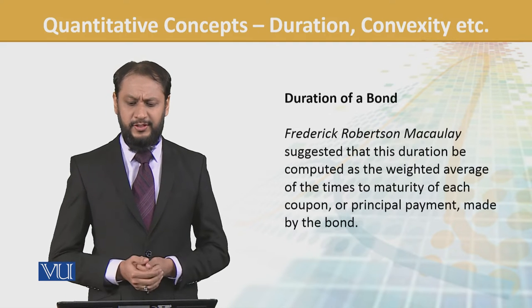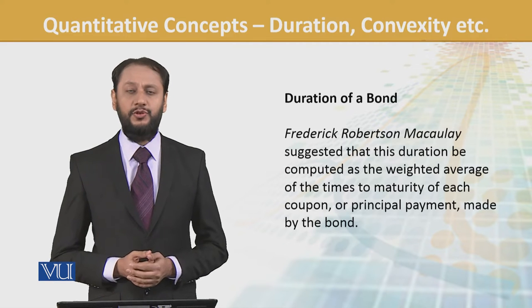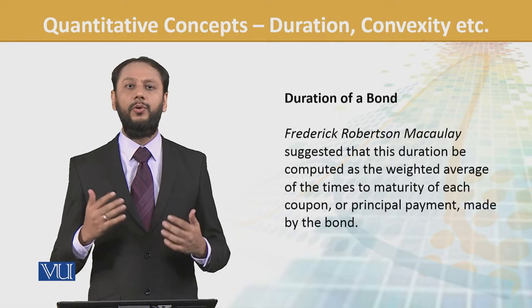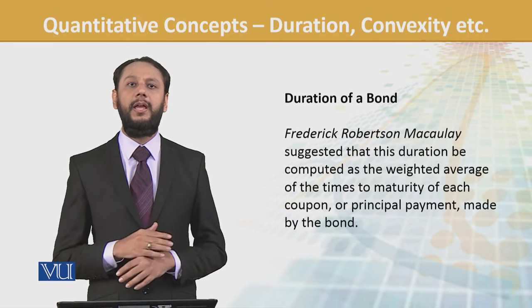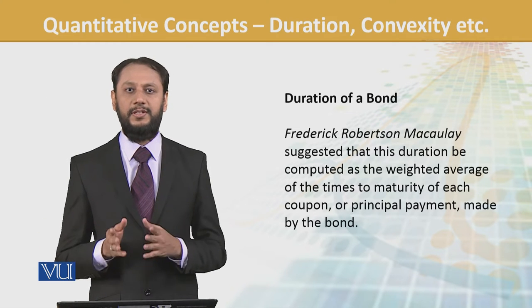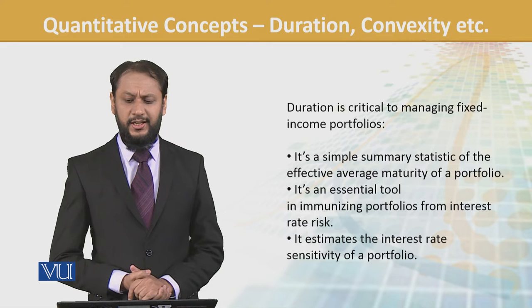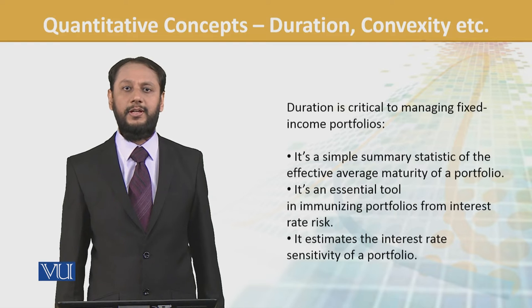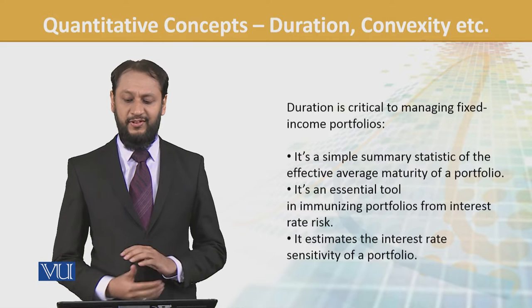Duration — named after Frederick — is computed as a weighted average of times to maturity of each coupon or principal payment made by the bond. Some bonds may not even have a coupon, so it captures both coupon and principal payments. It's not just the bond term; for a 5-year bond, duration is not simply 5 years. When we say duration, it's a measure of interest rate change sensitivity. Duration is critical to managing fixed income portfolios because the biggest impact on us comes from interest rates, and we need to know how that's going to affect us.